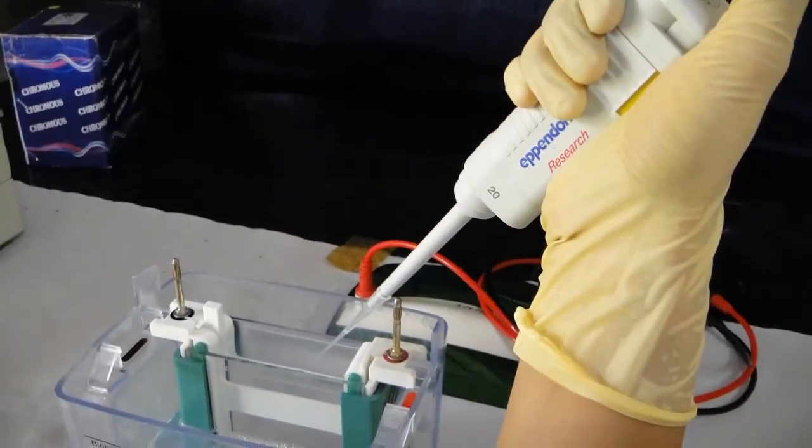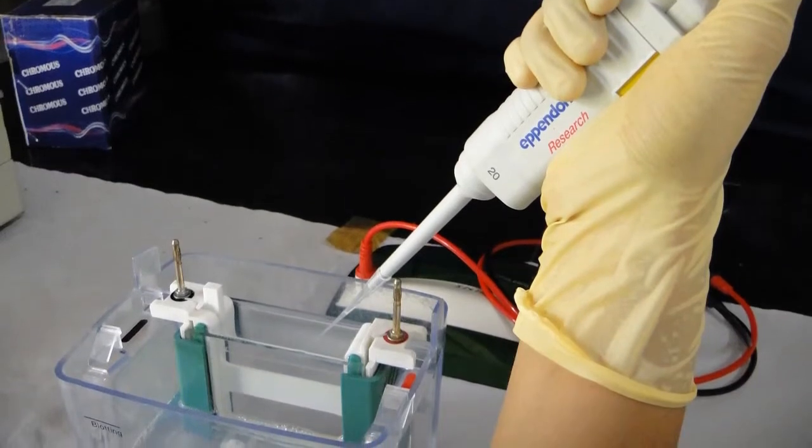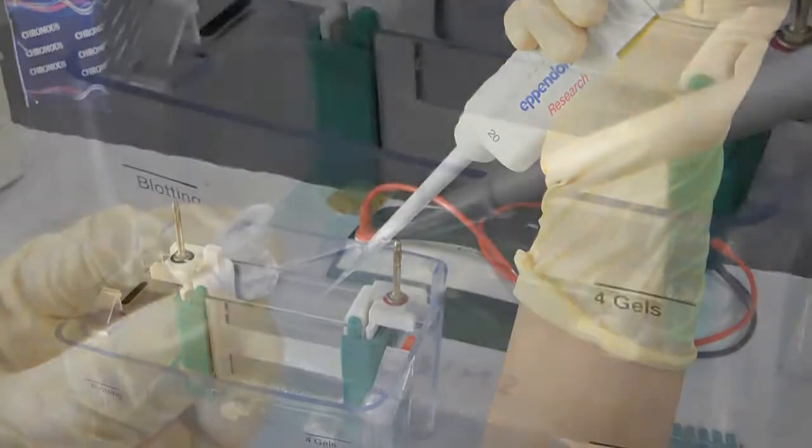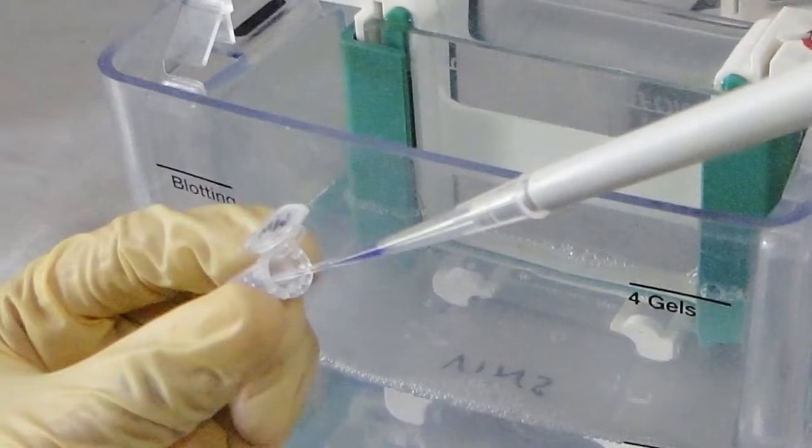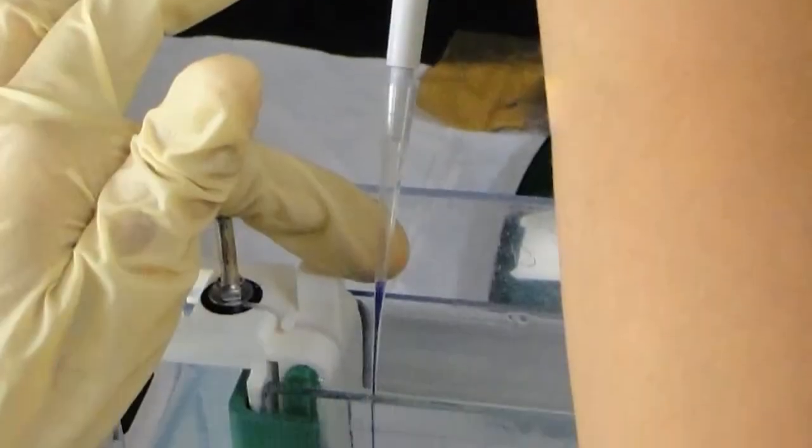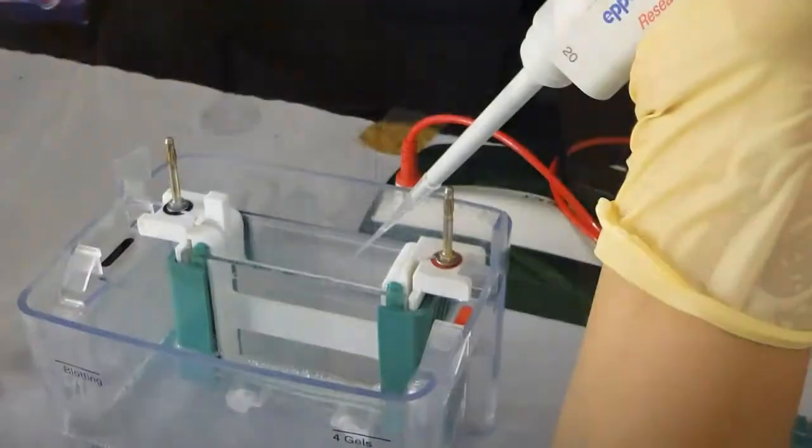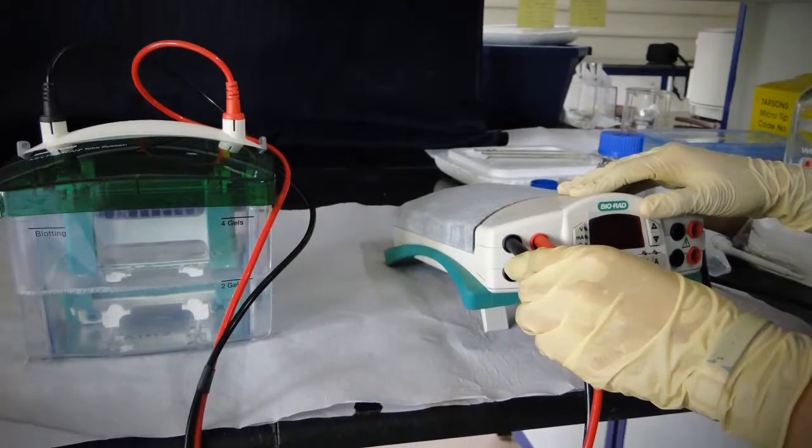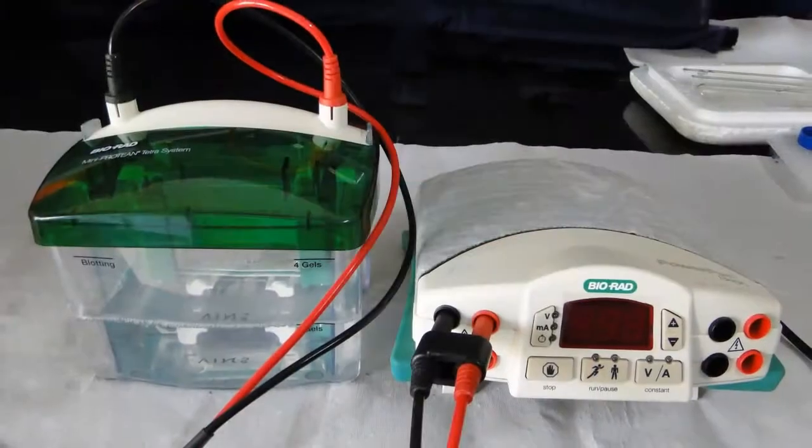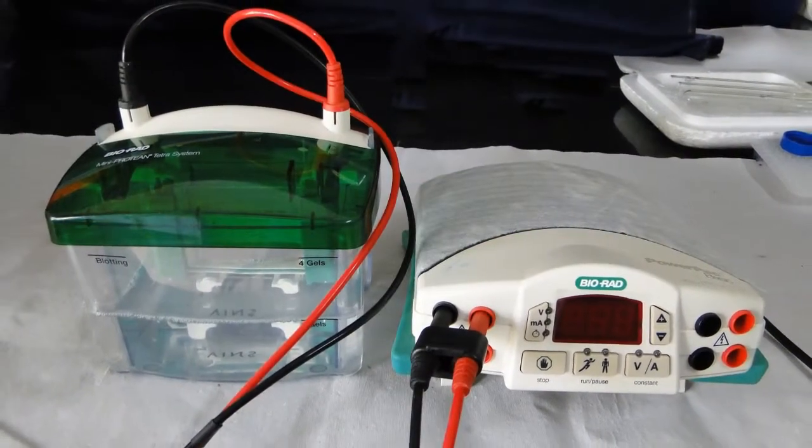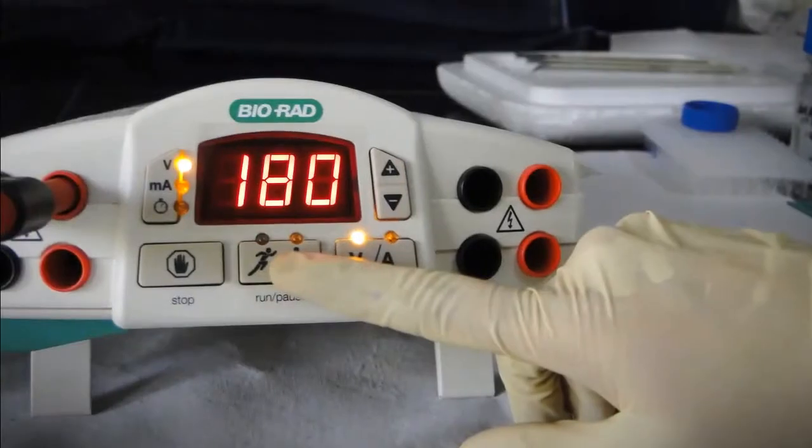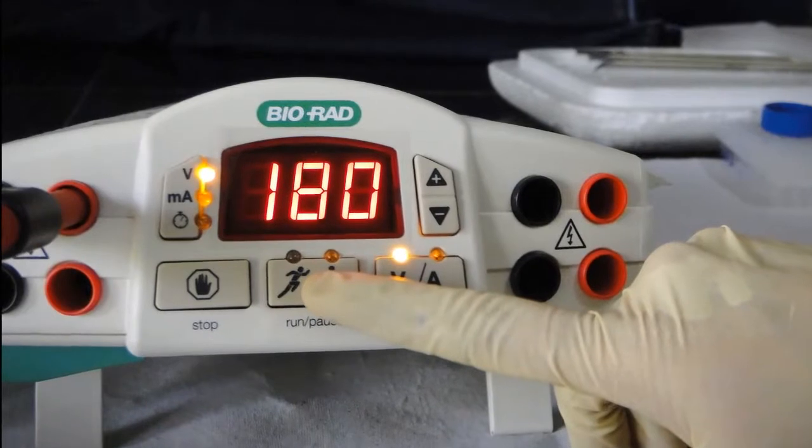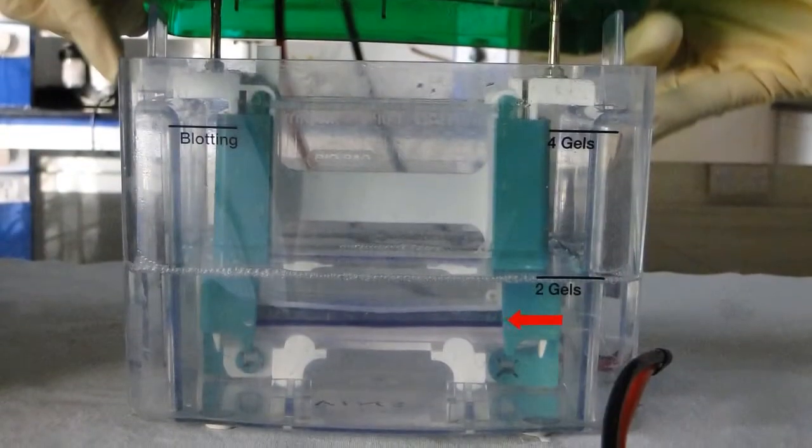Rinse the loading tip a few times with buffer. Make sure that all the buffer is pipetted out before loading the samples. Insert the loading tip to a few millimeter from the well bottom and deliver the samples into the well. Rinse the syringe a few times with buffer after loading. Attach the power supply by closing the lid. Make sure that the connection is correct, i.e., black to black and red to red. Set the voltage up to 180 volts and run for 1 hour. Don't allow the dye front to go out of the gel.